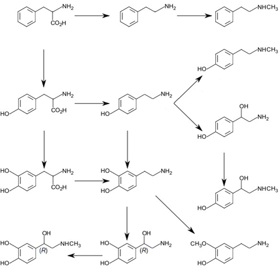The residue glutamine 185 is necessary in binding the catecholamine substrate. The replacement of this residue reduces the catalytic efficiency of PNMT by tenfold up to three hundredfold. In the absence of an inhibitor or ligand,